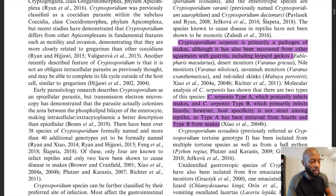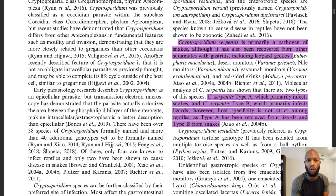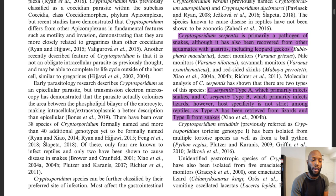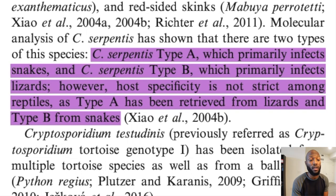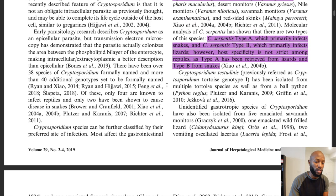There are actually 38 known species of cryptosporidium and 40 more that haven't even been named. In terms of snakes and lizards, the main one we look at is Cryptosporidium serpentus, especially with snakes. There are two types of serpentus: one that primarily affects snakes, and type B that primarily affects lizards, but either can occur in both snakes and lizards.